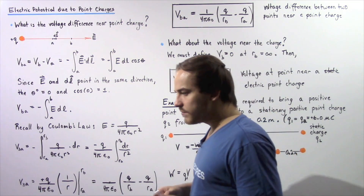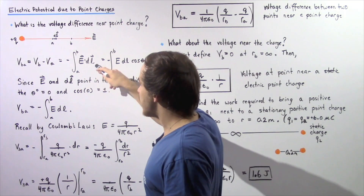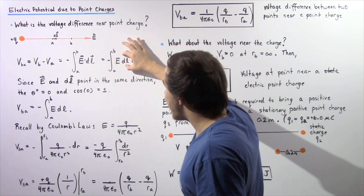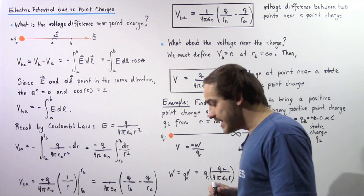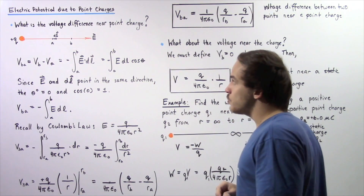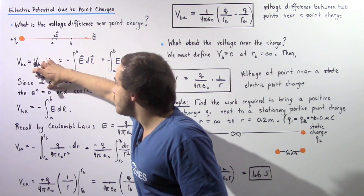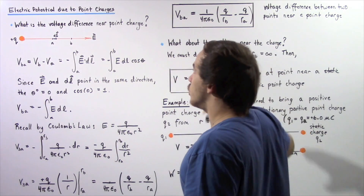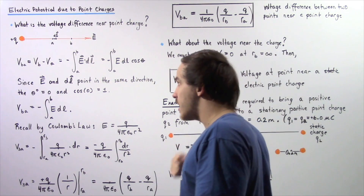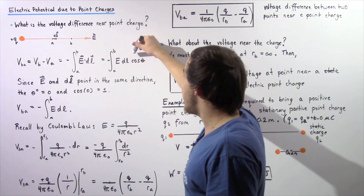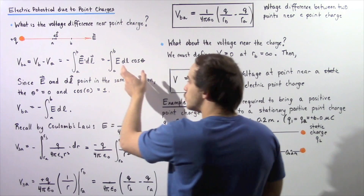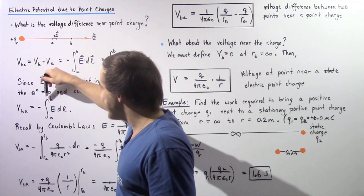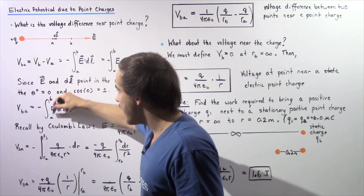By definition of the dot product, E·dL equals the magnitude of E times the magnitude of dL times the cosine of the angle between them. Because vector E and vector dL point in the same exact direction — in the positive direction along the x-axis — the angle between them is zero. Since cosine of zero is one, the voltage difference between points A and B simplifies to the negative of the integral of E dL from A to B.